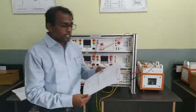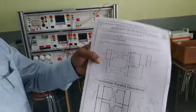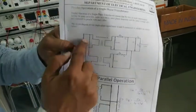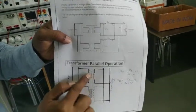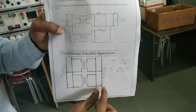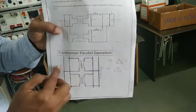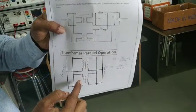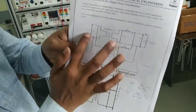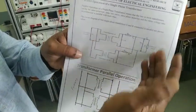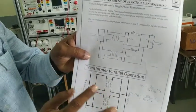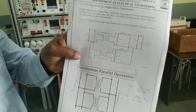Now, for parallel operation, this is the simple circuit showing how to connect two single phase transformers in parallel. Transformer 1 and Transformer 2 are connected in parallel. This is the primary bus and this is the secondary bus — that is how you connect the transformers. You can also label them Transformer A and Transformer B, with the supply on the primary side and the load on the secondary side. These are two techniques to connect transformers in parallel, and this is called parallel operation of a transformer.